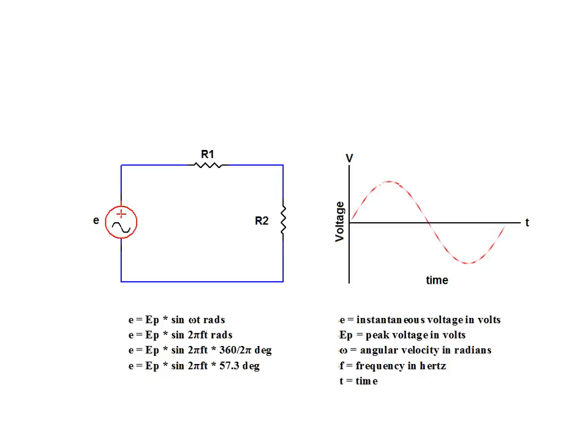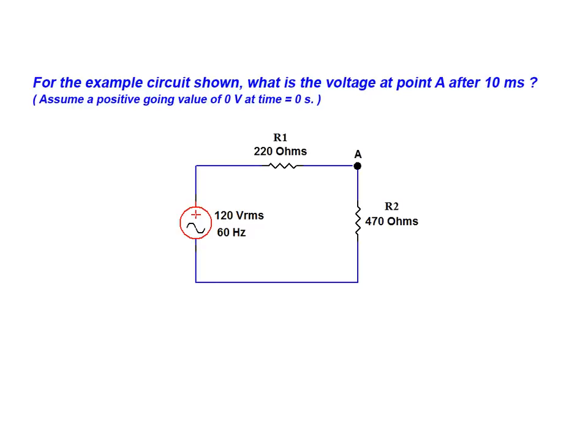An example will illustrate the use of this relationship. For the example circuit shown here, we are asked to calculate the voltage at point A after 10 milliseconds. For the purpose of this question we will assume a positive going value of 0 volts at time equal to 0 seconds.